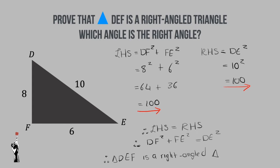Always remember that your 90 degree angle is opposite your hypotenuse. Since DE is my hypotenuse, the angle opposite the hypotenuse will be my 90 degree angle, which means angle F would be 90 degrees. Therefore, angle F is equal to 90 degrees.